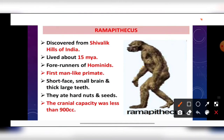The next form is Ramapithecus, discovered from the Shivalik Hills of India. It lived about 15 million years ago. It is the forerunner of hominids because it was a man-like primate — the first man-like primate. Characters include a shorter face, small brain, and thick large teeth. They ate hard nuts and seeds. Cranial capacity was less than 900 cubic centimeters.